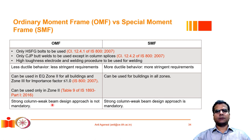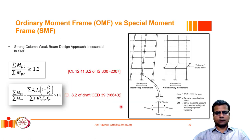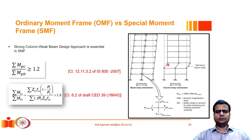An important design philosophy for earthquake-resistant structures is the strong column weak beam (SCWB) design philosophy. This is not mandatory for ordinary moment frames but is mandatory for special moment frames. The idea is that under seismic loading, plastic hinges may form, but they should not form in the columns. If a hinge forms in a column it can lead to complete structural instability and collapse, whereas hinges forming in the beams allow much more ductile, stable, and progressive yielding.